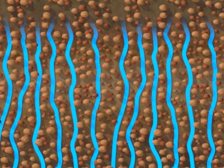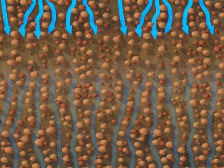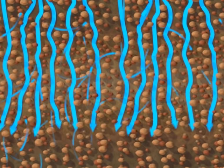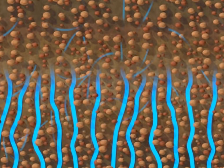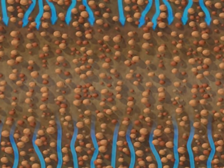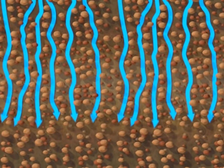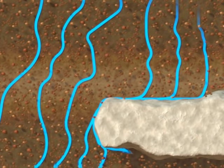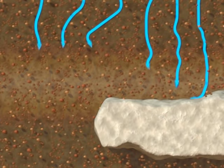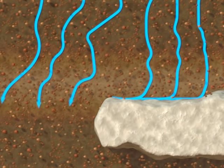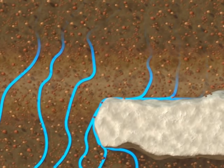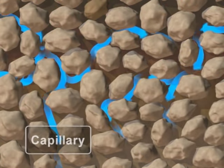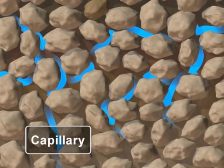Water is nearly always moving in the soil, and it can be in any direction simultaneously. Gravity is the dominant force that moves water downward. Restricted soil layers of compacted soil or bedrock are among the reasons water moves laterally. Capillary action — the attraction of water into soil pores — can move water in any direction.